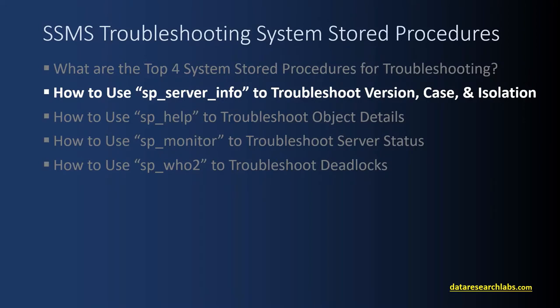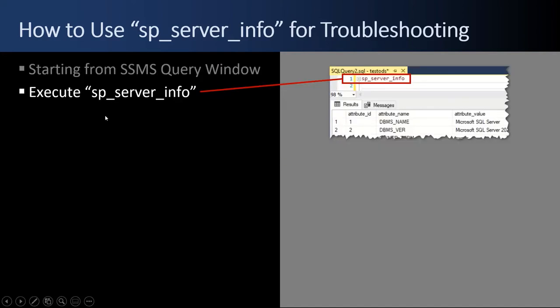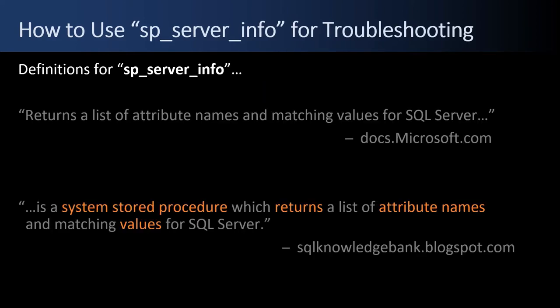Next up: how to use SP_ServerInfo to troubleshoot version, case, and isolation level. Starting from SQL Server Management Studio, we execute SP_ServerInfo from the query window. A definition for SP_ServerInfo is best summed up by SQL Knowledge Bank: it's a system stored procedure which returns attribute names and values.